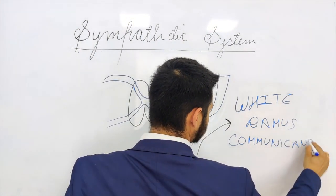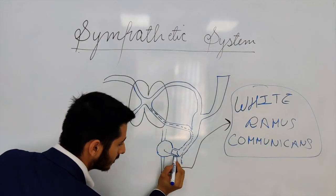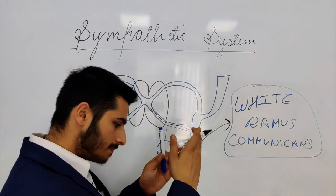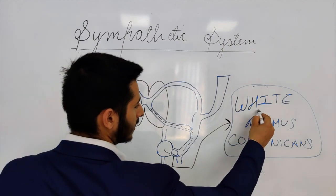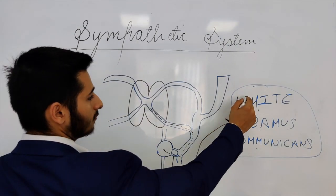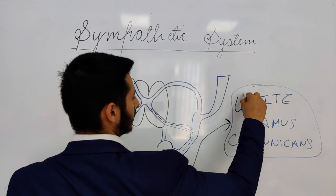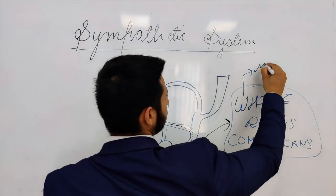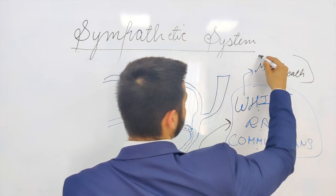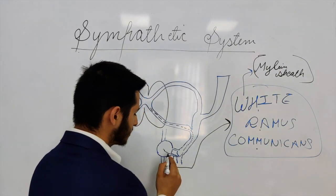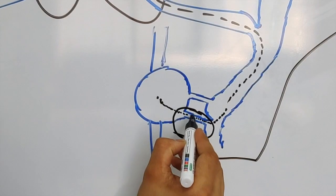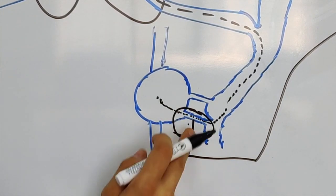The white ramus communicans is this structure right here. It originates from the anterior ramus and connects the trunk to the anterior ramus. We call it 'white' because the fibers present in this communicans are myelinated — they have a myelin sheath around them, which gives a white appearance.